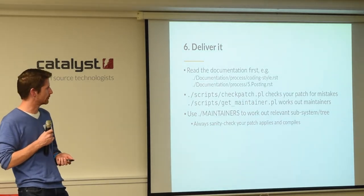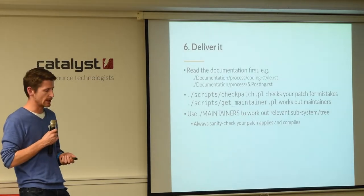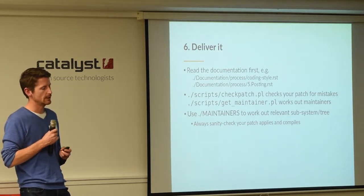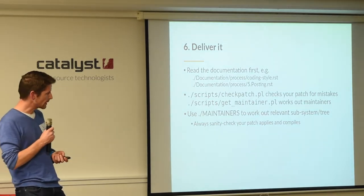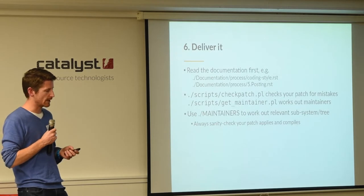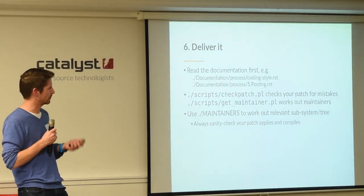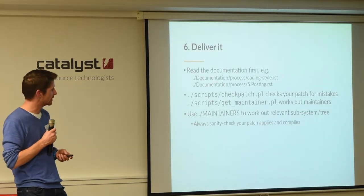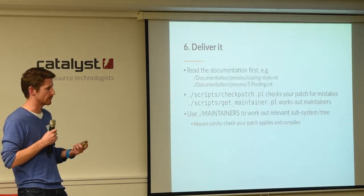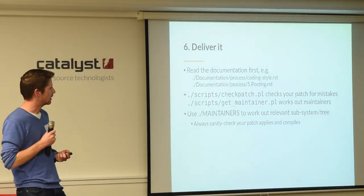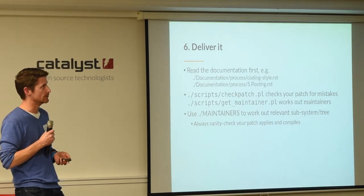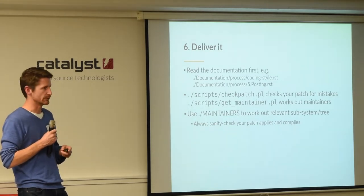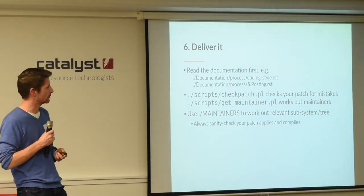There are a couple of handy scripts you can use. One is checkpatch.pl — run it on your patch file and it tells you if you've made any dumb mistakes, like missing a signed-off tag or incorrect formatting. Every time I run checkpatch I find something I've done wrong. The other useful one is get_maintainer, which tells you who to send your patch to based on the code you've changed and which mailing list to use. It's also worth checking the git tree your maintainer is actually using and confirming your patch applies there and still compiles before you send it off.